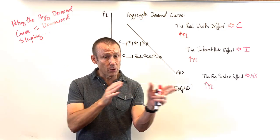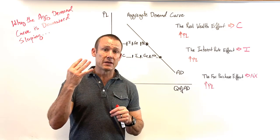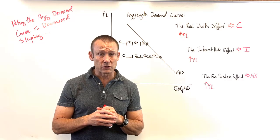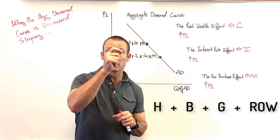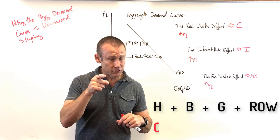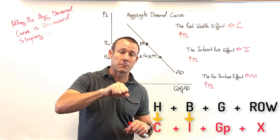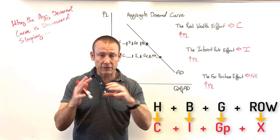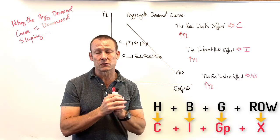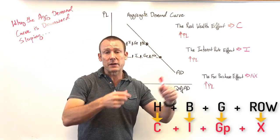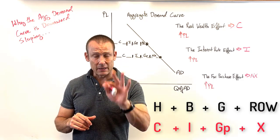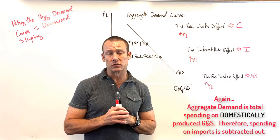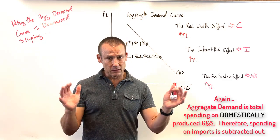Aggregate demand is basically total overall spending with four components. There are four demanders in our macro economy of final goods and services: households, businesses, government, and the rest of the world. Households spend — that's consumption; businesses spend — that's investment; government spends — that's government purchases; the rest of the world spends — those are exports. And we subtract out spending on imports because aggregate demand is the total demand for domestically produced goods and services.